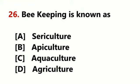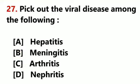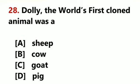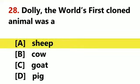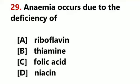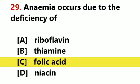Beekeeping is known as Apiculture. Pick out a viral disease among the following: Hepatitis. Dolly, the world's first cloned animal, was a sheep. Anemia occurs due to the deficiency of folic acid.